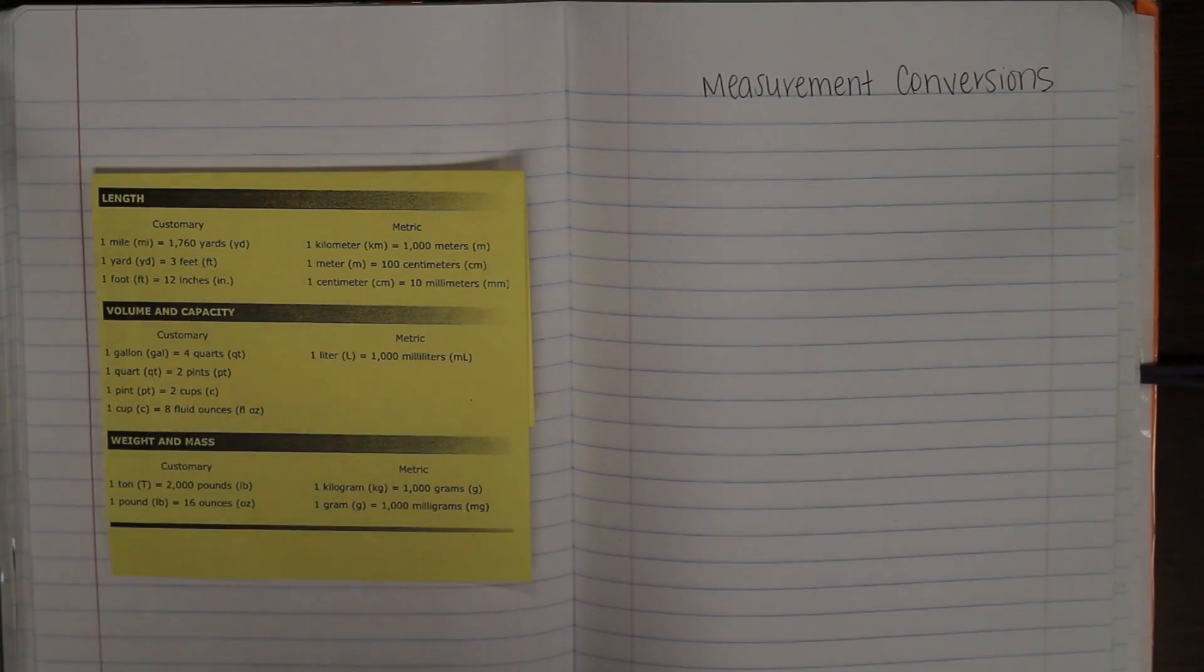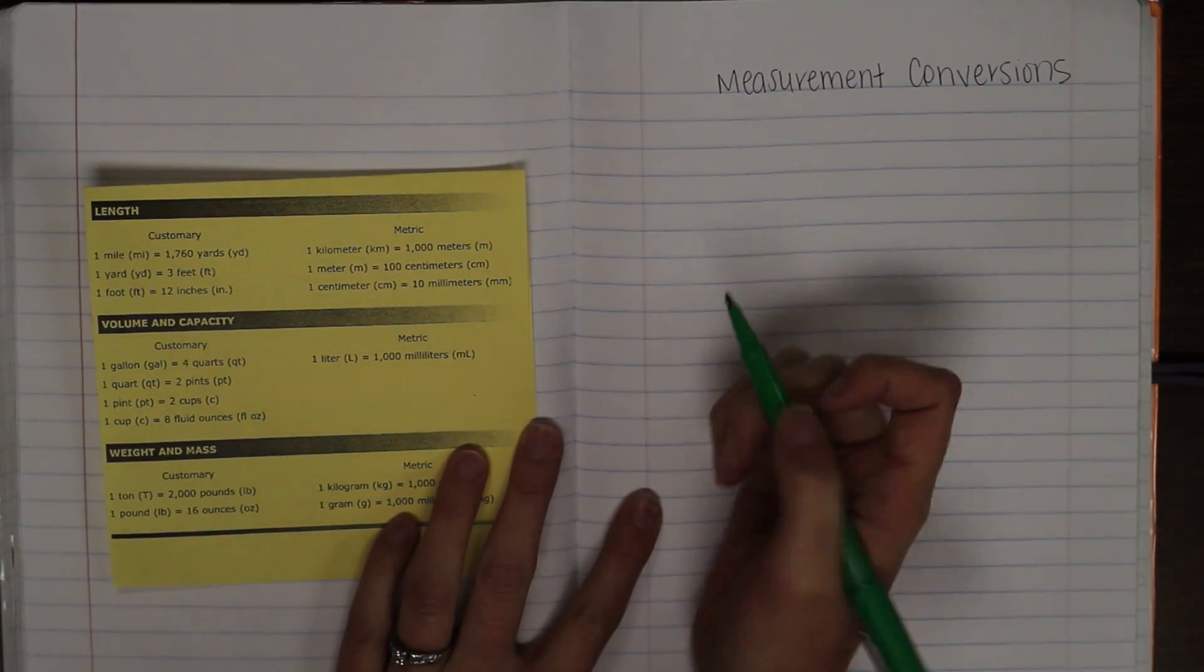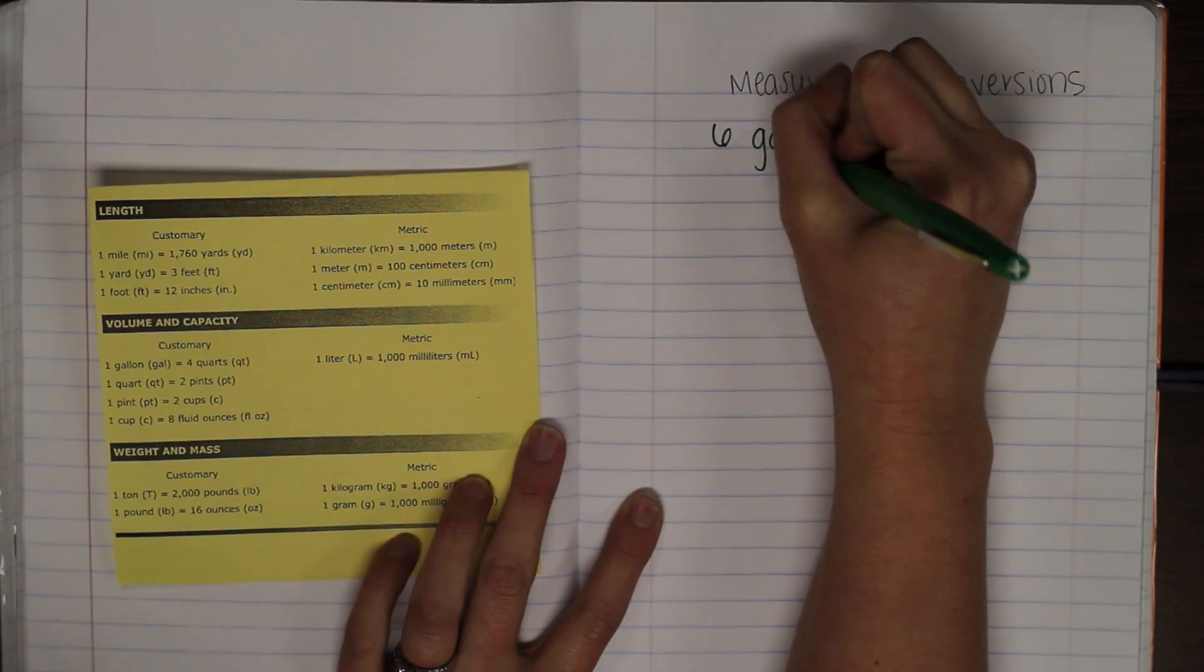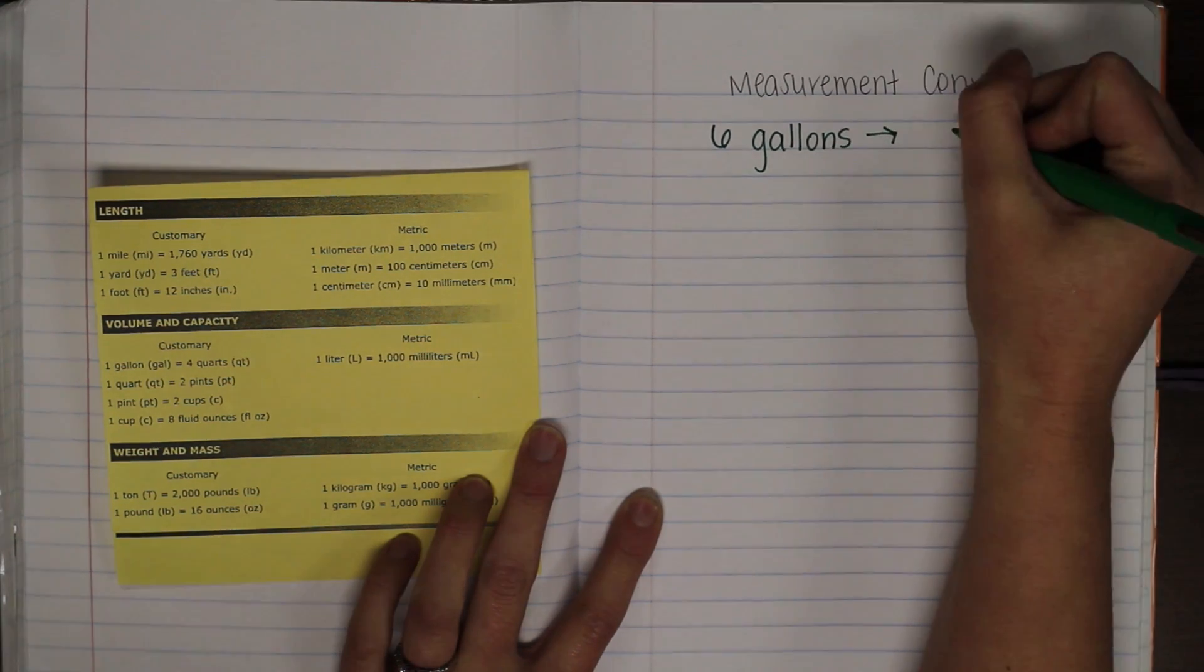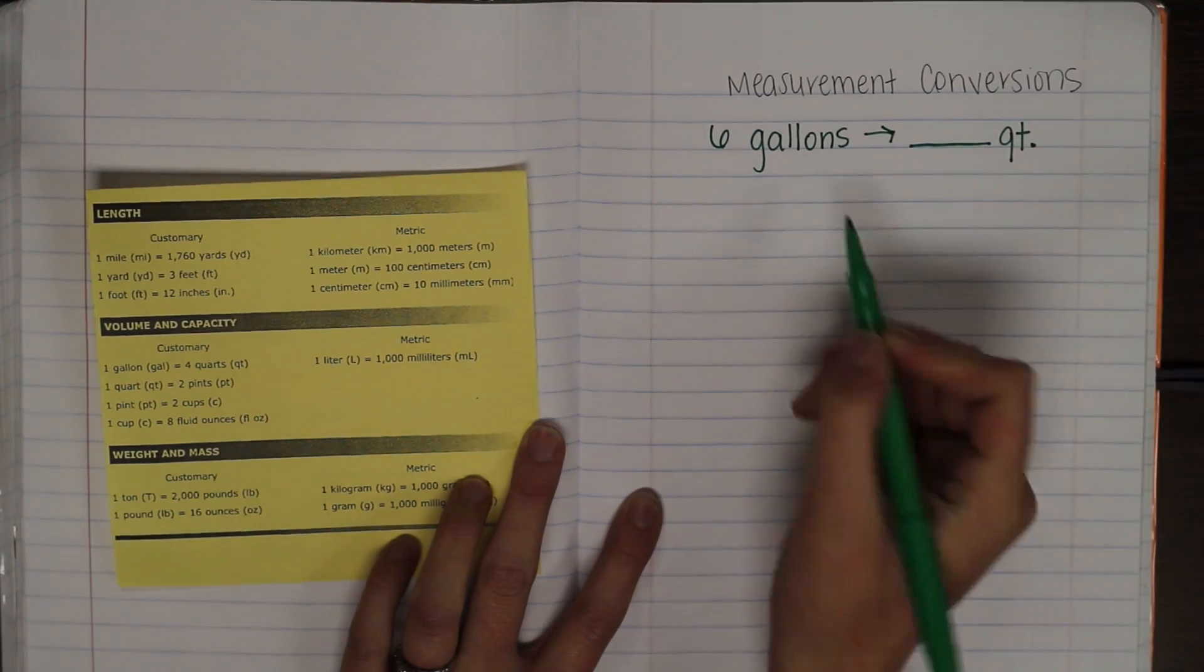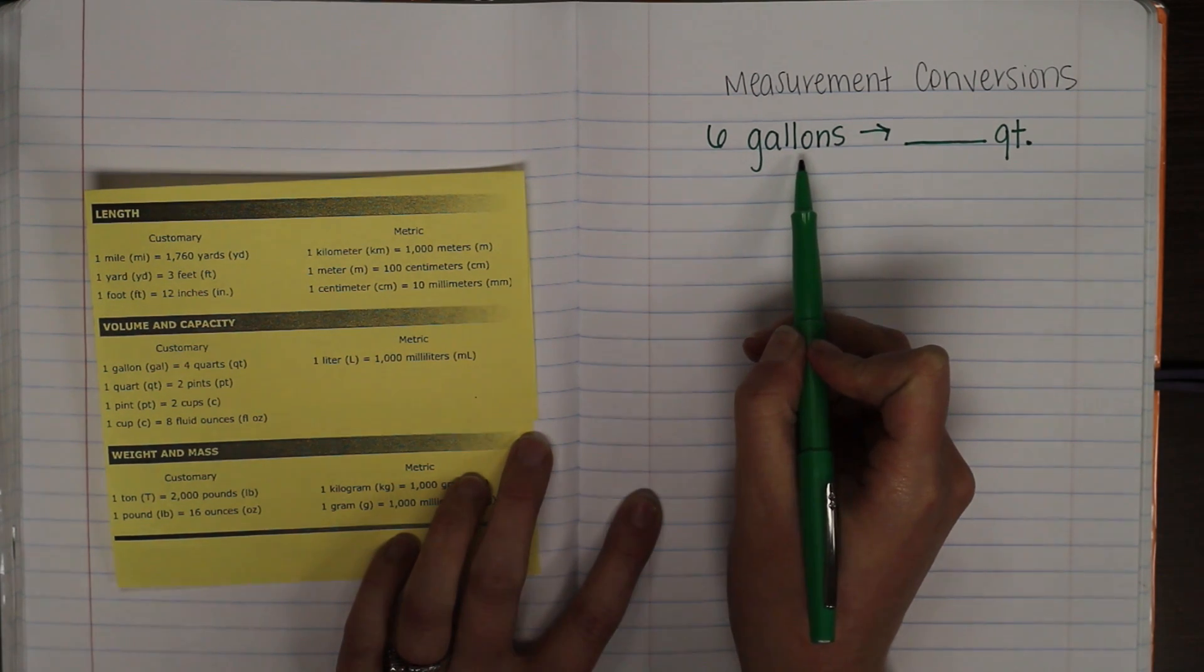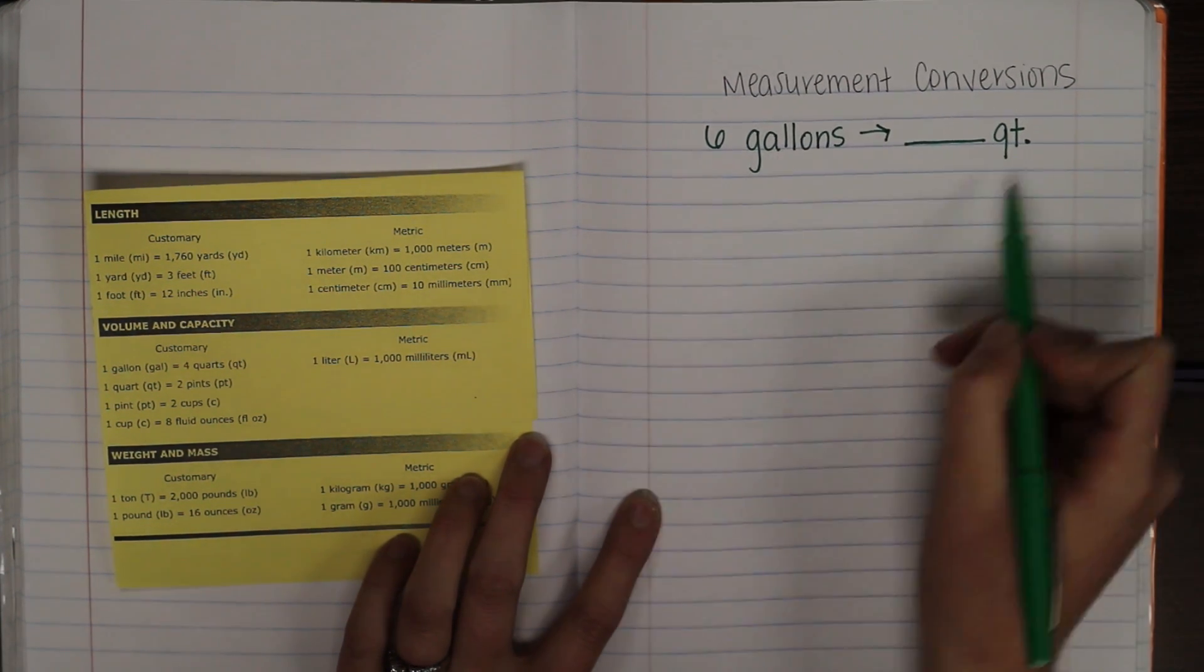So, I'm going to walk you through the process of converting units of measurements, and we're just going to start with an example. And we're going to convert six gallons into blank quarts. Okay? So, if you imagine a gallon, a gallon is about the size of a gallon of milk, so imagine that.